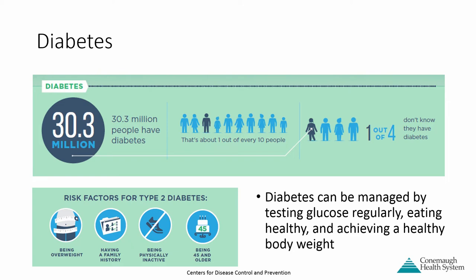That's about one in every ten people. If those trends continue by 2030, one in three people will have diabetes. Having diabetes can be managed by testing your blood sugar regularly, eating healthy foods, and achieving a healthy body weight. We can still live a healthy lifestyle even with a diagnosis of diabetes. We need to focus on what we're eating, how much we're eating, and how often we're eating.